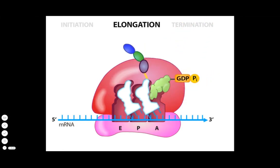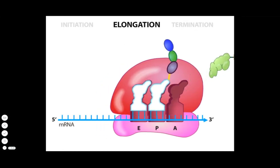The ribosomes of E. coli can speed through these elongation steps, linking together 16 amino acids per second.